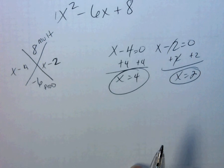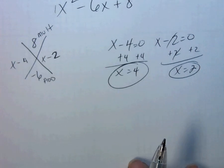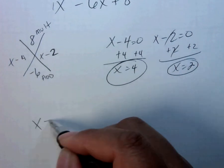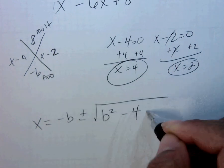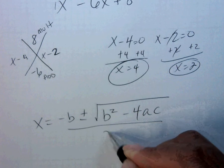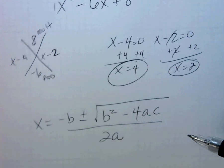Okay, so now that I have my roots, I want to check them using the quadratic formula. x equals negative b plus or minus the square root of b squared minus 4 times a times c, all over 2 times a.